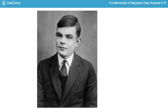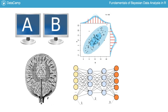The reason I start out a course on Bayesian data analysis with a story from the Second World War is that a key to Alan Turing's success in cracking the Enigma code was his use of Bayesian methods. At the time, Bayesian methods were not widely used, but nowadays they are used in everything from A/B testing and statistical modeling to machine learning and robotics.